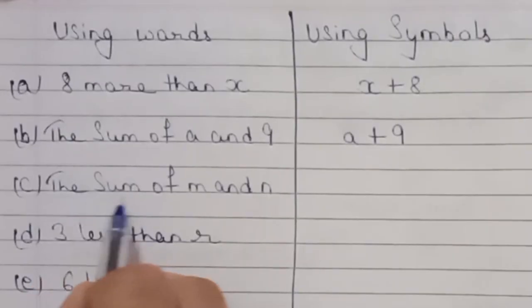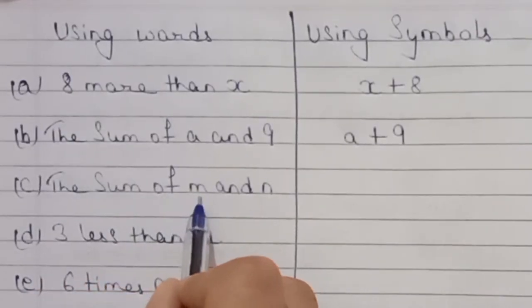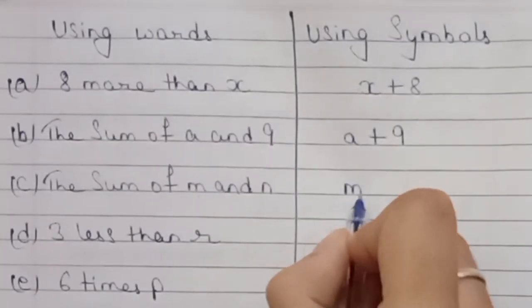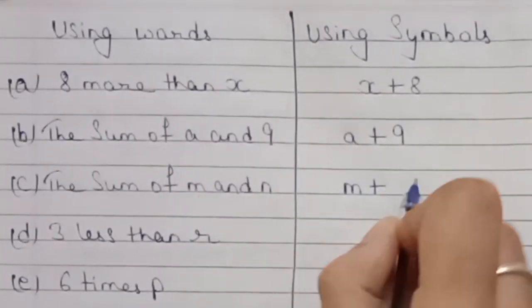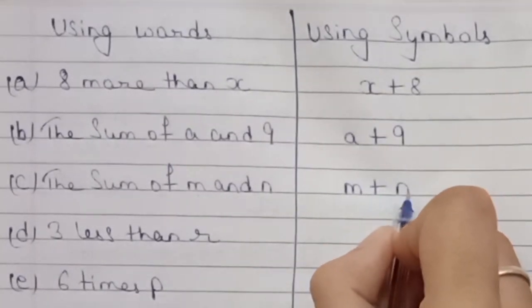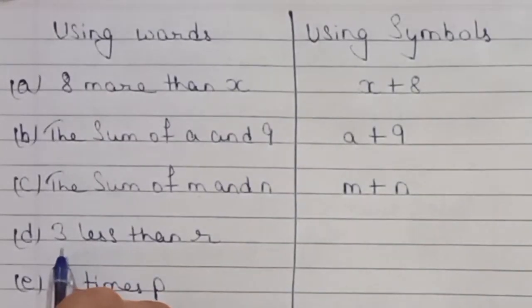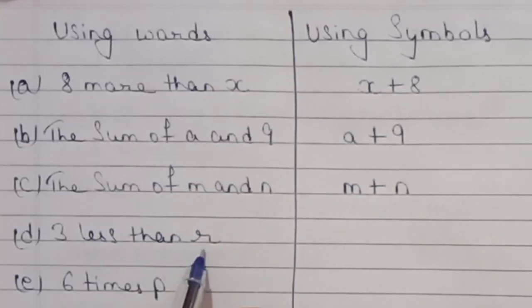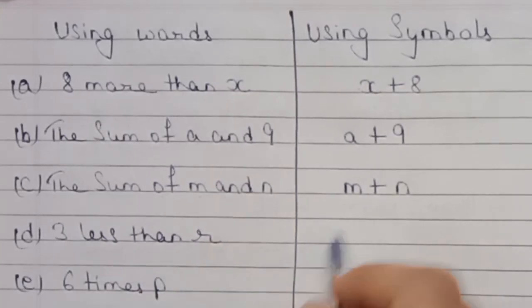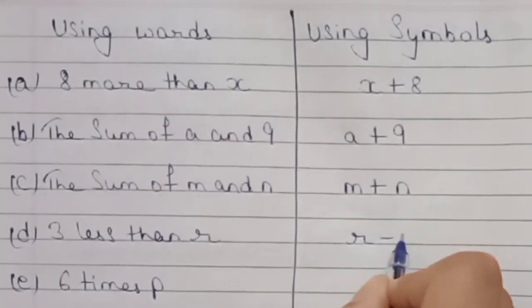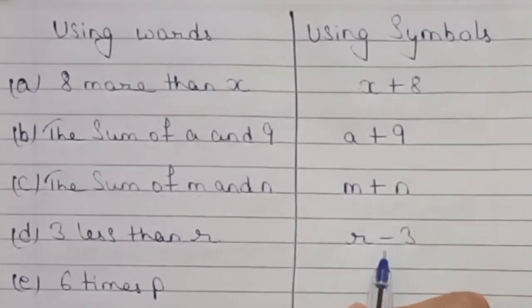C: The sum of m and n. Moving to the next part — 3 less than r. So our answer is 3 less than r, which is written as r minus 3.